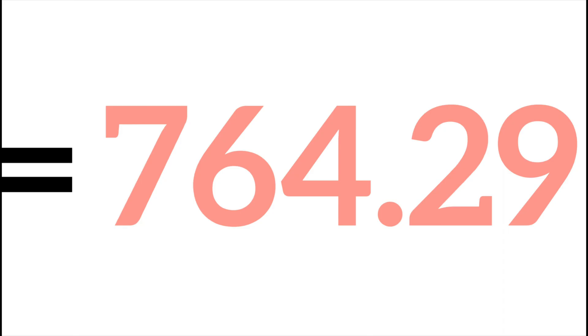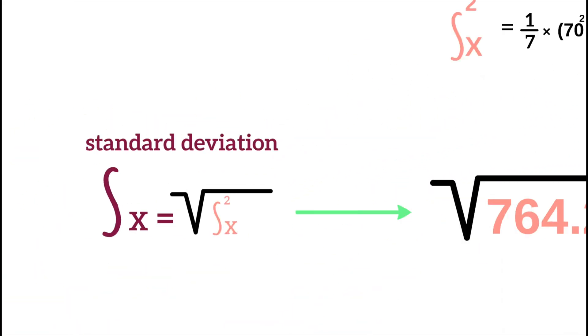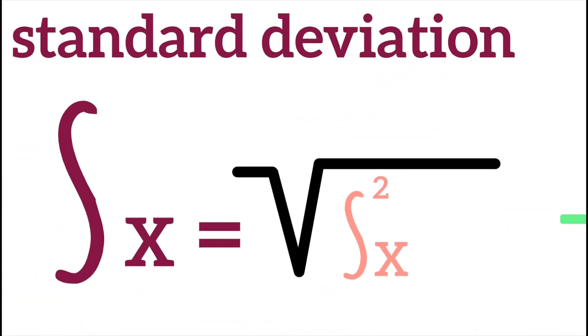This is where the standard deviation comes into play. We take the square root of the variance, which gives us a standard deviation of 27.64.